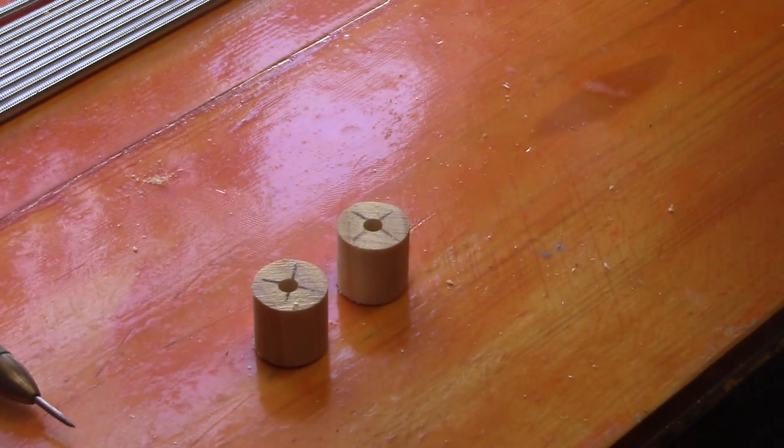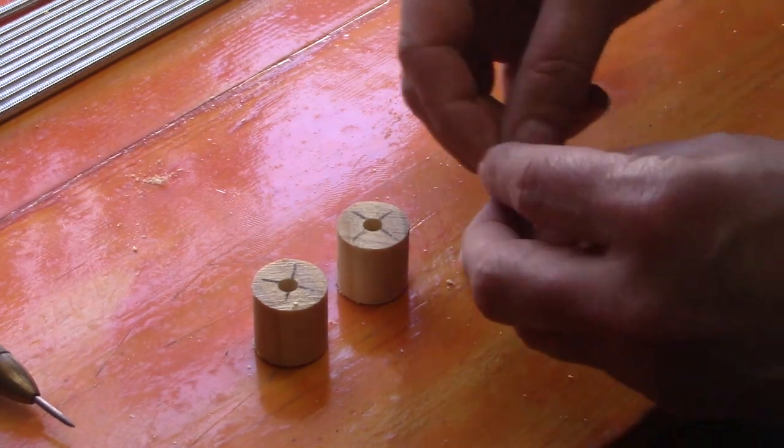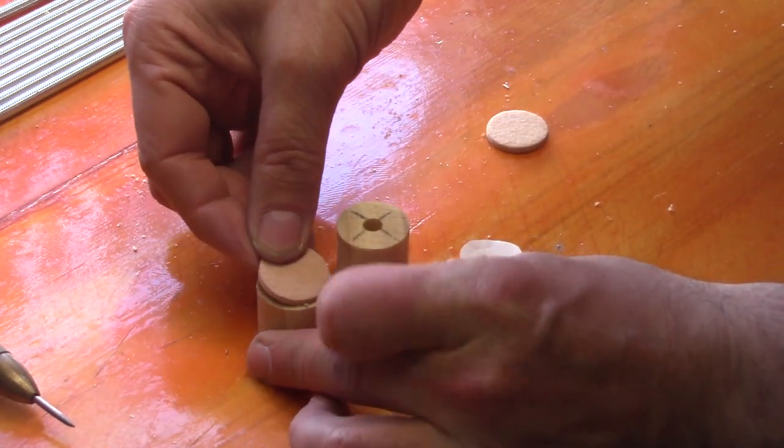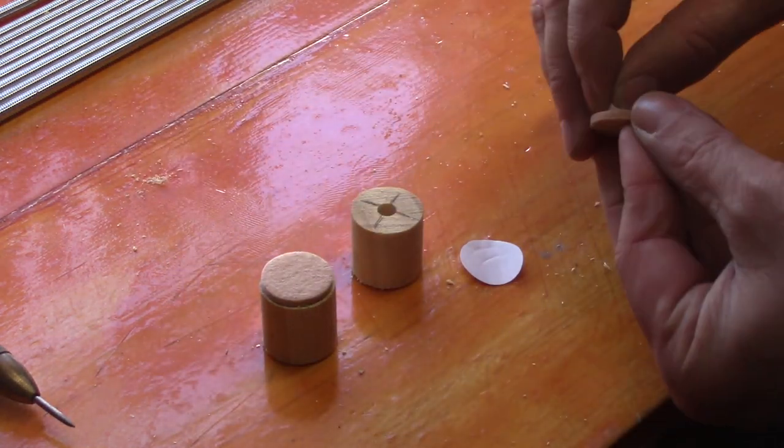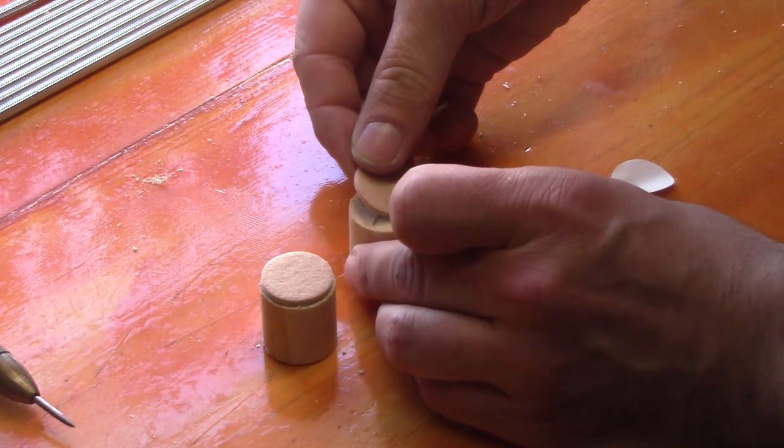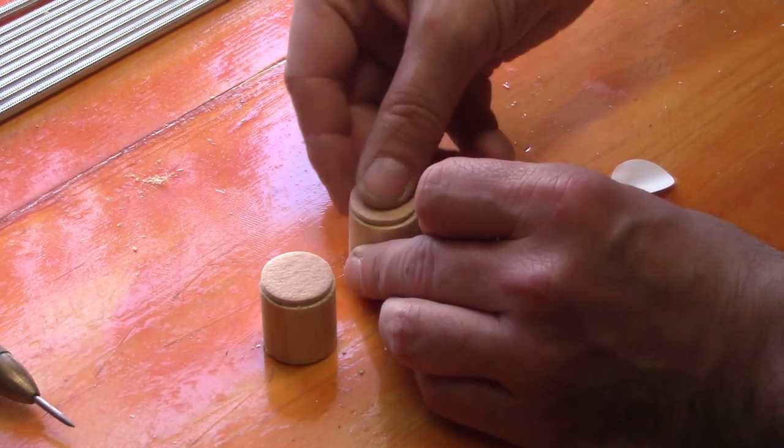Next we're going to stick down these round little felt pads onto the inside face of the clamp. This will just protect it as it clamps down on the wood of the guitar body.